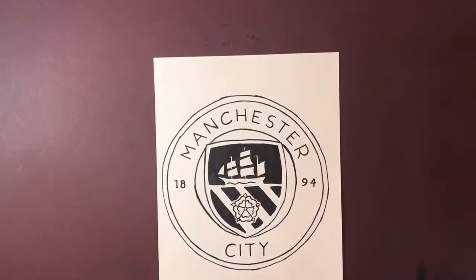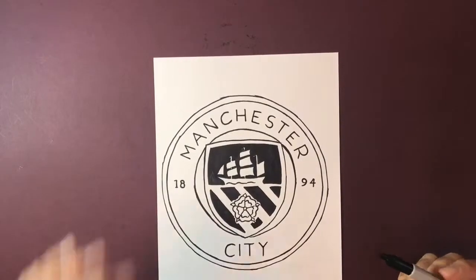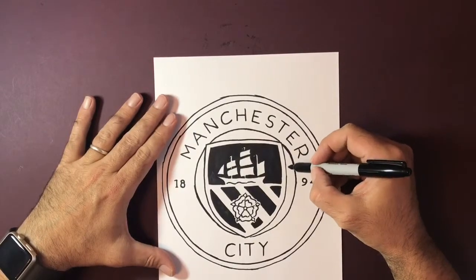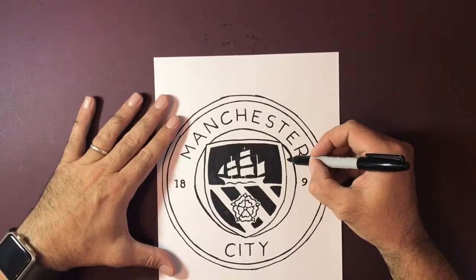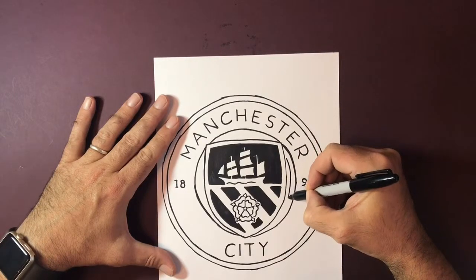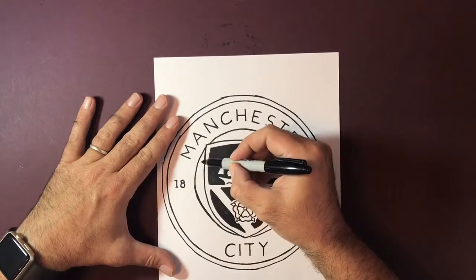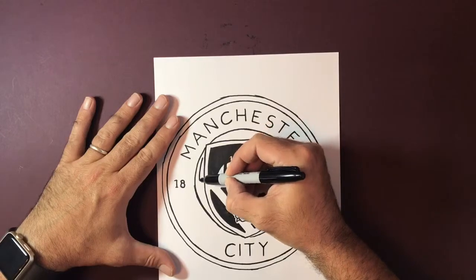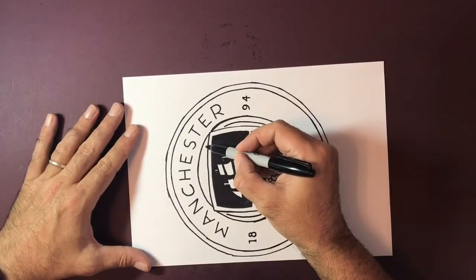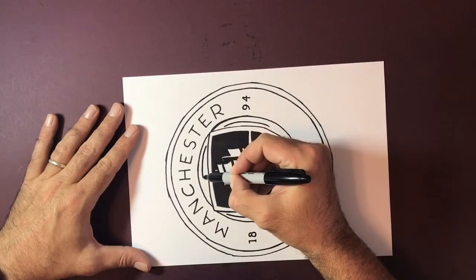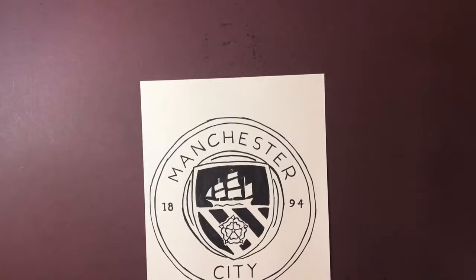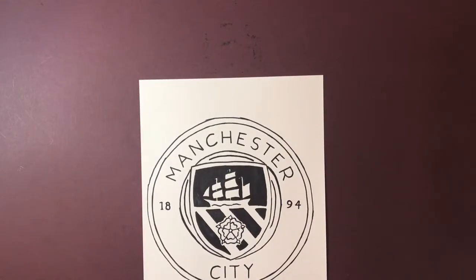So there we have it guys, I've just time-lapsed the rest of that. I've just got two areas that I need to just fill in. So we've got a line that comes in either side of this and one that comes around the top there. I guess this is another circle. I hope you enjoyed that. That's my Manchester City Premier League football team badge.